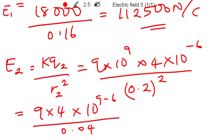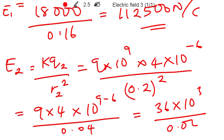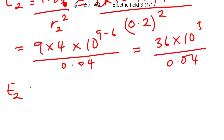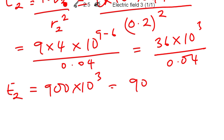This equates to 36 times ten to the power of three divided by 0.04. Therefore E2 equals a value of 900 times ten to the power of three, which is the same as 900,000 newtons per coulomb.